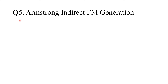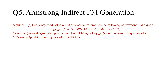The final question is a bit different — it's about Armstrong indirect FM generation. A signal m(t) frequency modulates a 100 kHz carrier to produce a narrow-band FM signal given by the following expression. You are asked to sketch or draw a block diagram to generate a wide-band FM signal with a carrier frequency of 75 MHz and a peak frequency deviation of 75 kHz.